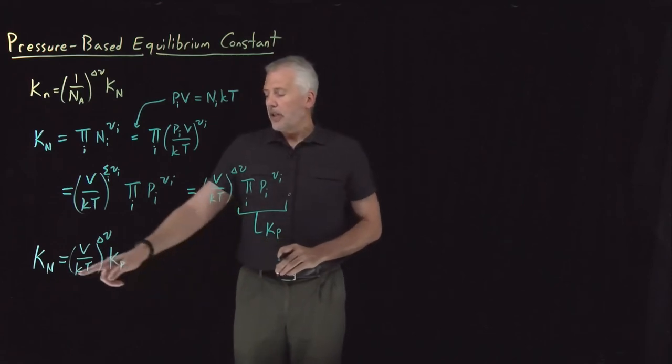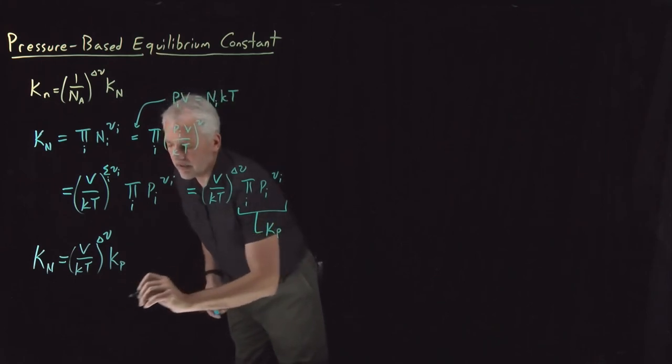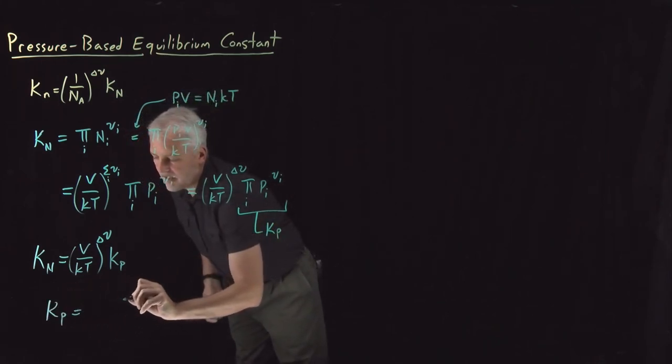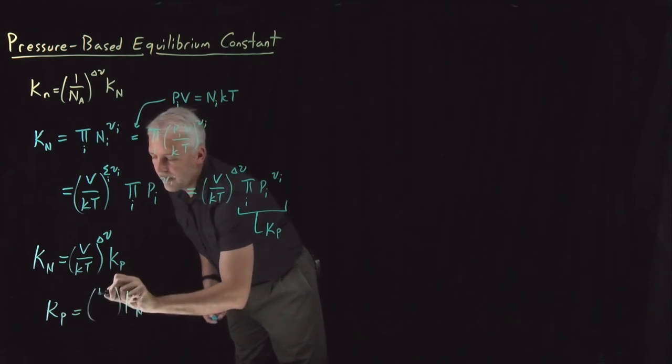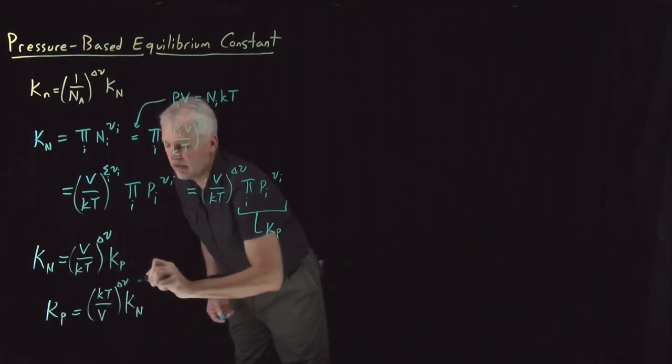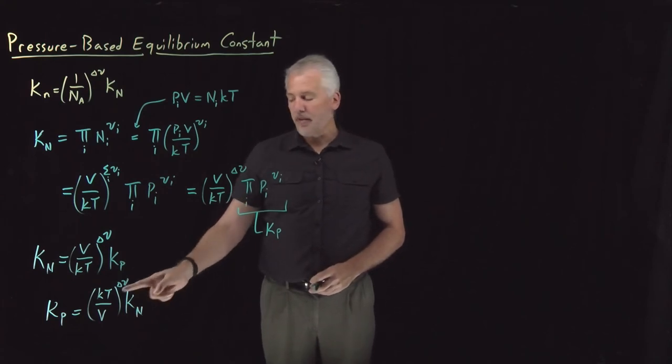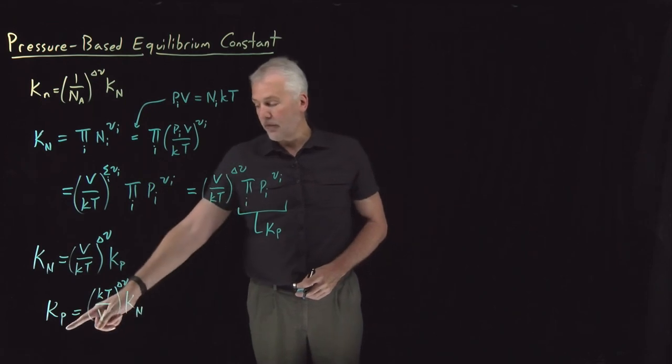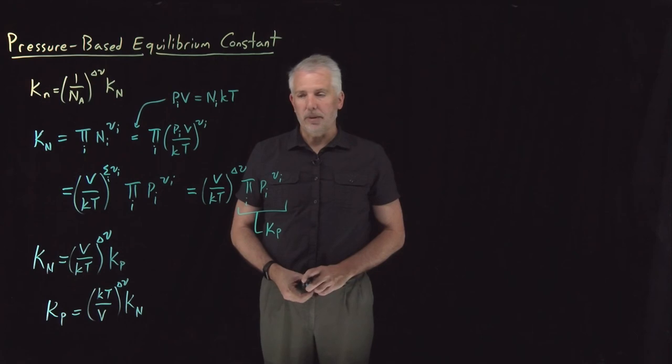Since usually if we've calculated the value of KN, we'd like to get a value of KP, I'll flip that equation around and write instead KP is equal to KN, the K big N, multiplied by kT over V—I flip this upside down—raised to the delta nu. So if I have a value for KN that maybe I've gotten by obtaining partition functions or looking it up, I can convert that into a KP by multiplying by some appropriate number of ratios of kT divided by V.